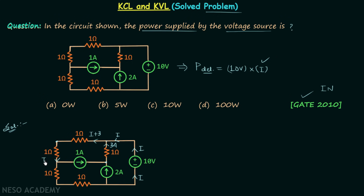Here we have I plus 3 current entering the node, and 1 ampere current is leaving the node. Let's say the current in this branch is in this direction, so this current will be equal to I plus 2. I plus 3 is the current entering, out of which 1 ampere is leaving — this means I plus 3 is now reduced to I plus 2.